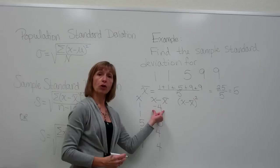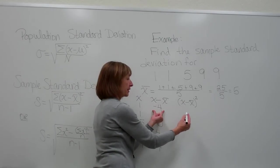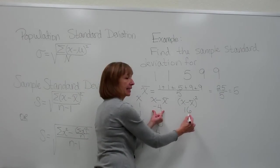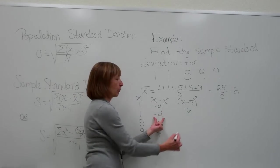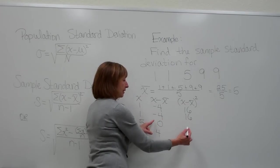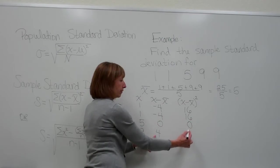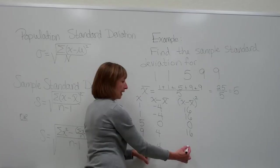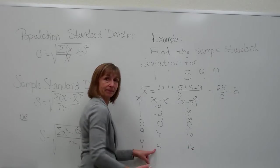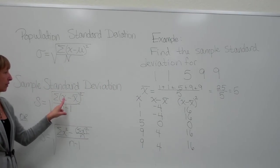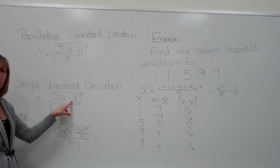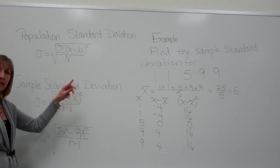Negative 4 quantity squared, negative 4 times negative 4 is positive 16. Negative 4 quantity squared is 16. 0 squared is 0. 4 squared is 16. And 4 squared is 16.